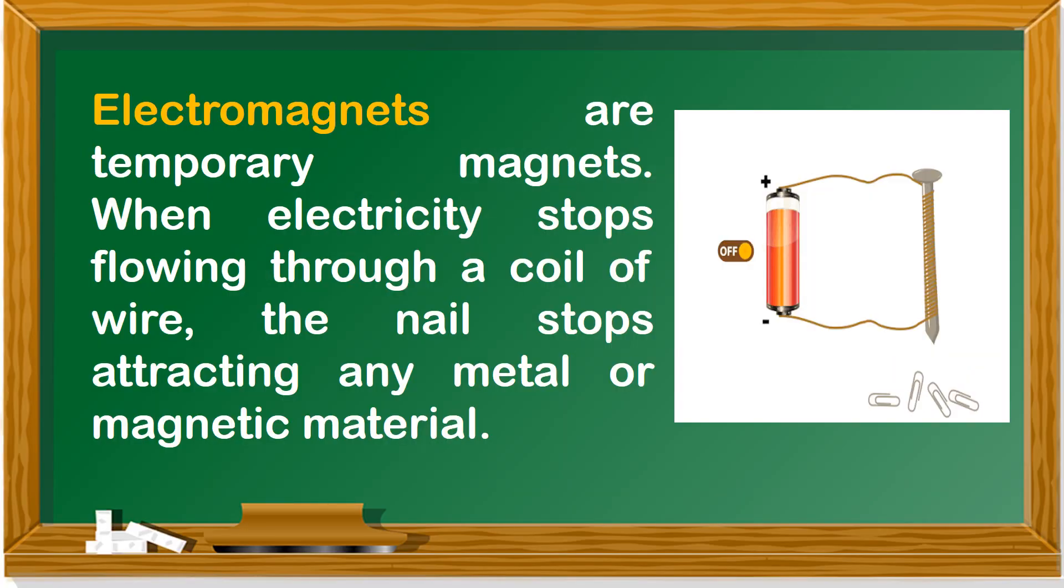Electromagnets are temporary magnets. When electricity stops flowing through a coil of wire, the nail stops attracting any metal or magnetic material.